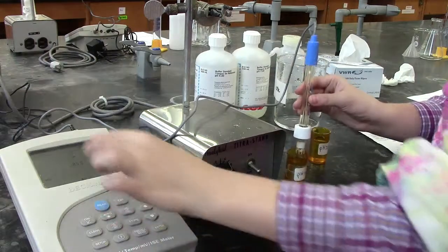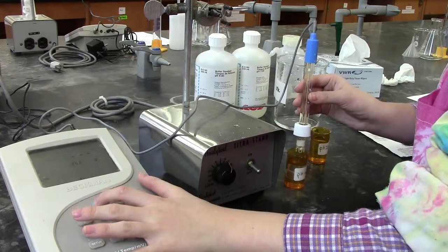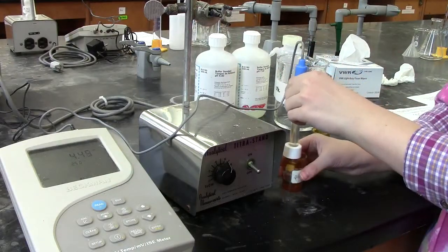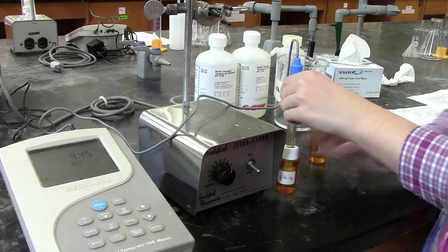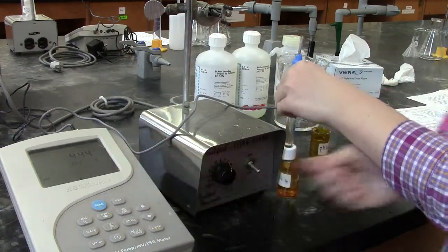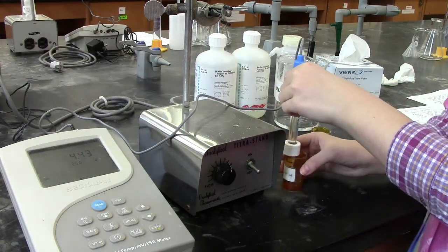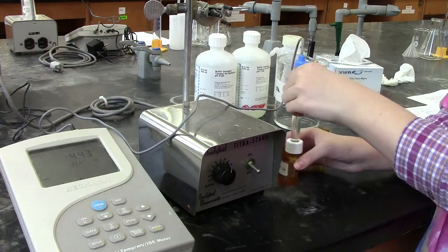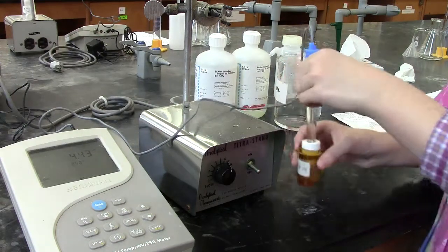At this point on the pH meter, you want to press the read button. This will allow us to take the first measurement. We want to watch what's known as the auto eye for it to stop blinking. When the auto eye stops blinking, that's an indication that the measurement has been successfully taken.